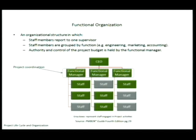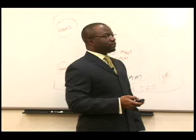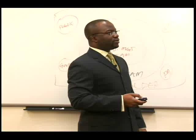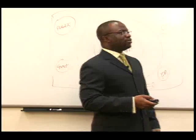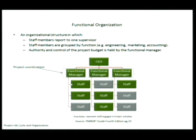In the functional organization, staff members report to one supervisor and are grouped by function — for example, engineering, marketing, and accounting. The authority over the project budget is held by the functional manager. The project manager's role is known as project coordinator or project expediter. The project manager has very little authority and is seen as someone who just coordinates the project. Ultimately, the real power lies with the functional manager.